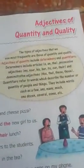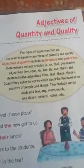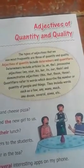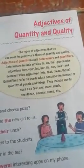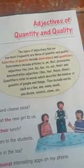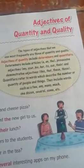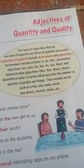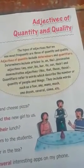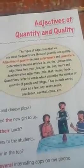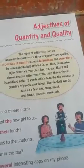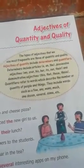Good morning all of you. Today I am going to tell you about adjectives of quantity and quality. First of all, I want to tell you the definition of adjective. Adjectives are the describing word. Adjective shows the quality of a noun or a pronoun. Examples: good, clever, intelligent, brave, etc.